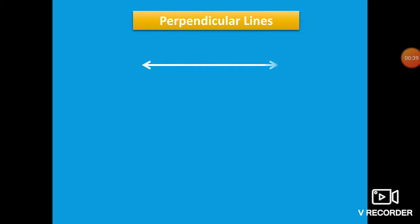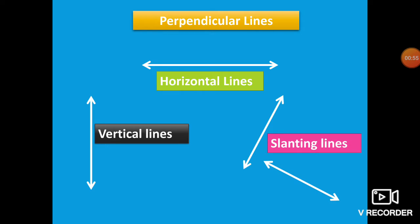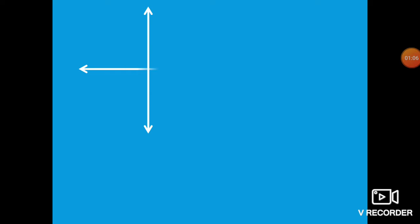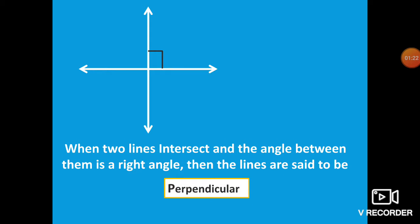First, see here a line. This is called a Horizontal Line. The next one is called a Vertical Line. We also have Slanting Lines. Here a vertical line and a horizontal line meet at a common point, and an angle is formed there. This angle is a right angle. So when two lines intersect and the angle between them is a right angle or 90 degrees, then the lines are said to be Perpendicular Lines.